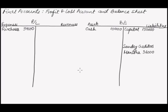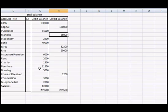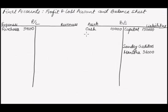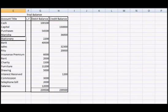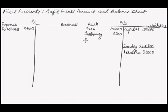The next one is Stationery, which is an asset, so we'll write Stationery on the asset side. Bank is also an asset, so we'll write Bank on the asset side — Bank is $40,000.